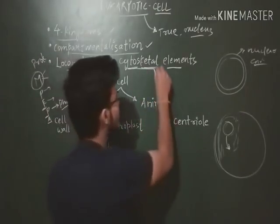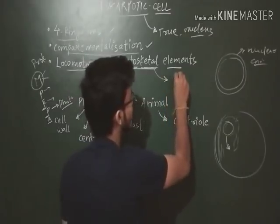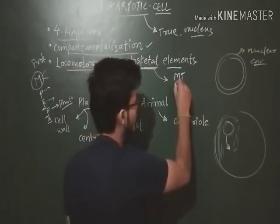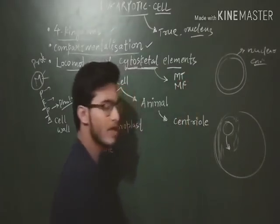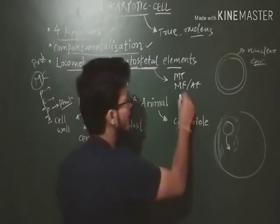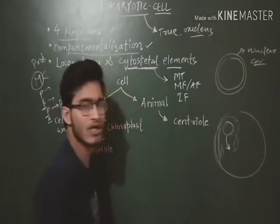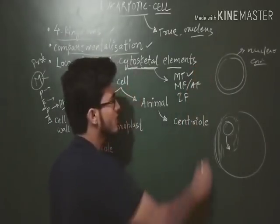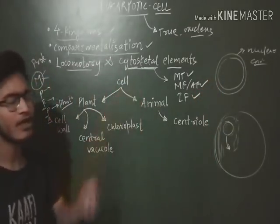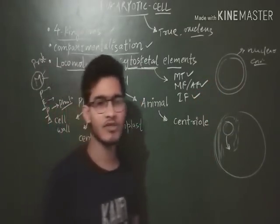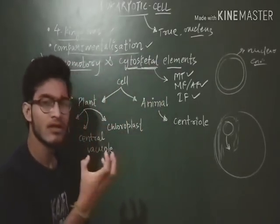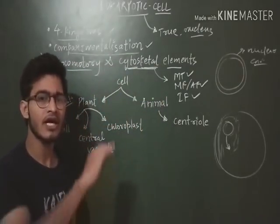Different examples of cytoskeletal elements are: microtubules, microfilaments (also called actin filaments), and intermediate filaments. These three types of cytoskeletal elements are present in eukaryotic cells and can provide rigidity, strength, as well as motion.